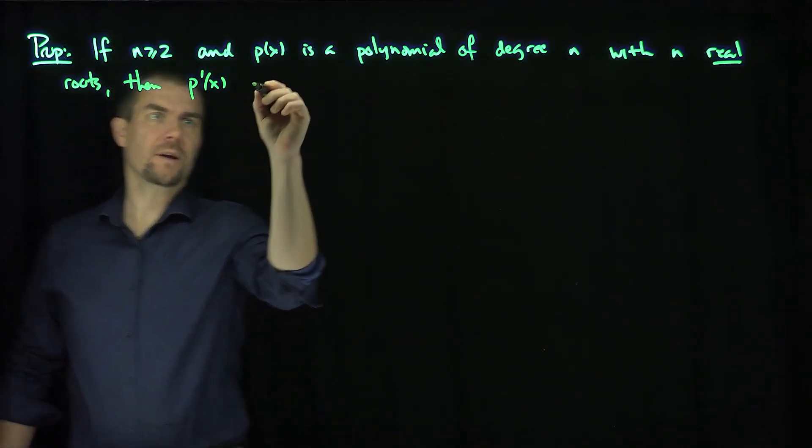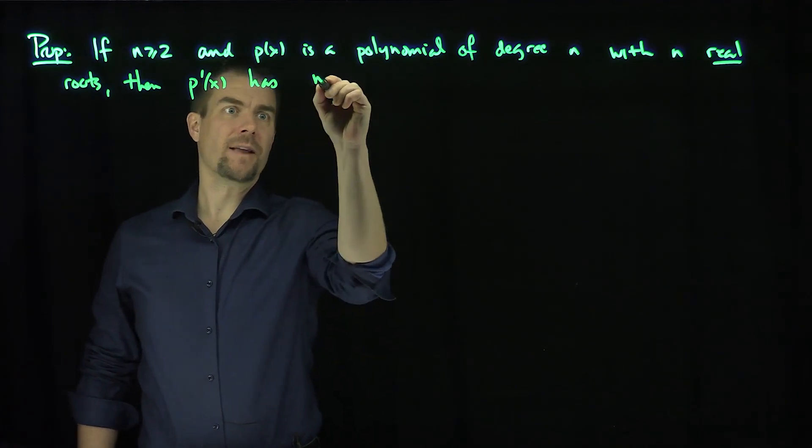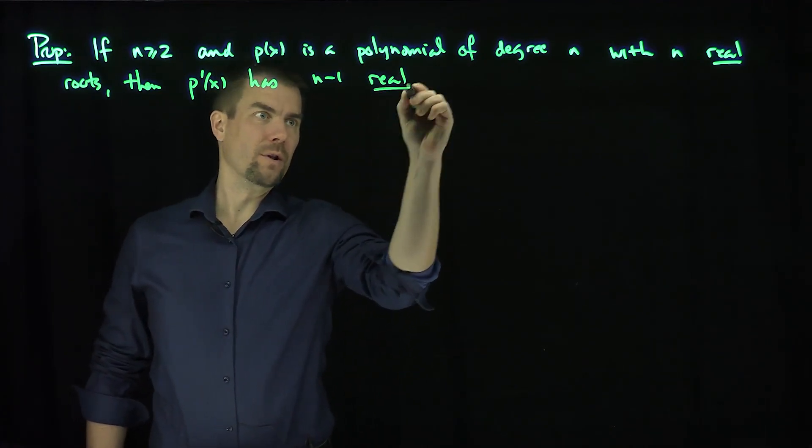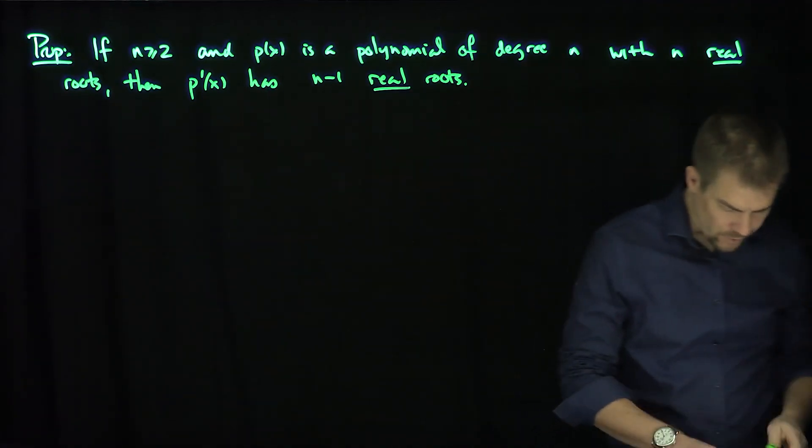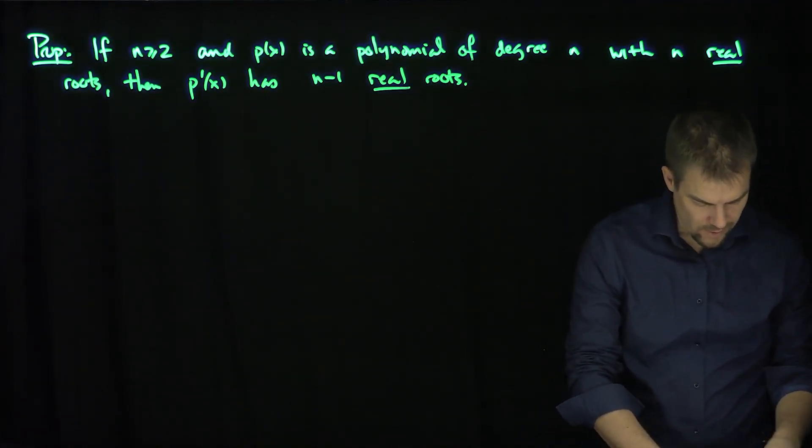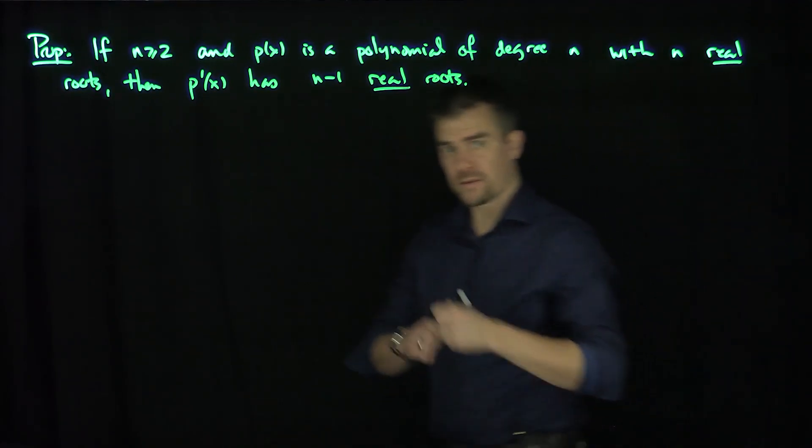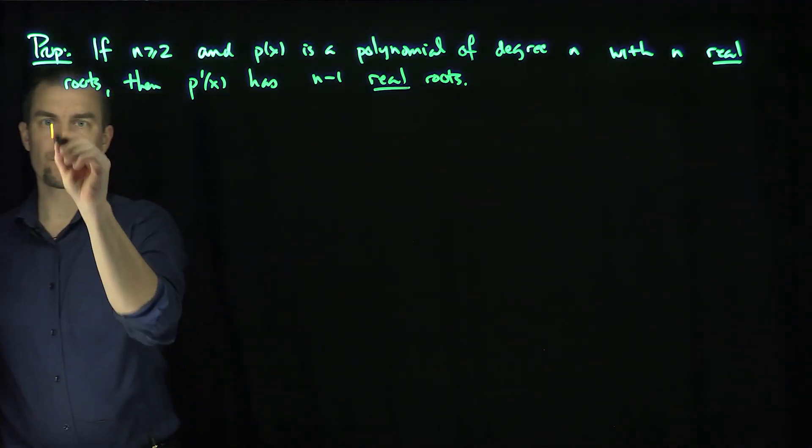then p'(x) has n minus 1 real roots. Okay? So here's how we do it. We're going to use the Mean Value Theorem. I know the polynomial over here has n real roots. So here's the proof.